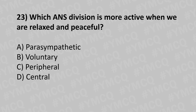Moving to our twenty-third question. Which ANS division is more active when we are relaxed and peaceful? Option A: parasympathetic. Option B: voluntary. Option C: peripheral. Option D: central. And the answer is option A: parasympathetic.